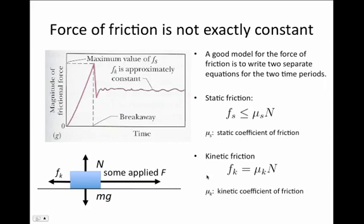Once the object is moving and sliding along, we model the kinetic force of friction as equal to the kinetic coefficient of friction times the normal force. The free body diagram for this sliding object shows its weight mg pulling down, a normal force pointing upward from the floor, a backward force from friction, and a forward applied force as we push it.